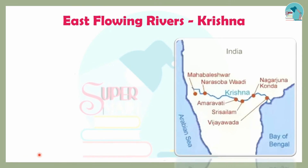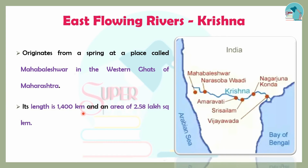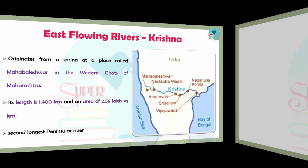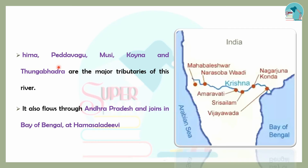Next is the Krishna River. Krishna originates in Maharashtra. Its length is 1,400 km and the basin area is 2,58,000 square kilometers. It is the second longest Peninsular River. Its tributaries include Himma, Pedavagu, Musi, Koyna, and Tungabhadra. The Krishna flows through Andhra Pradesh and joins the Bay of Bengal.